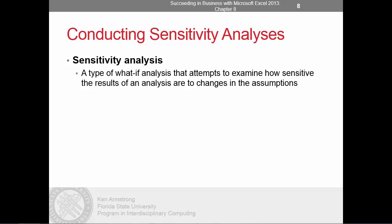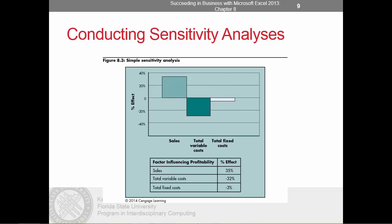Let's look at a sensitivity analysis chart. Because what-if analysis typically involves many estimates and projections, sensitivity analysis helps managers learn how tolerant projected results are to changes in underlying assumptions about cost, selling price, and quantity sold. For example, if we vary our selling price, our variable costs, and our total fixed costs by $1, we see that a $1 change in selling price has a 35% positive influence on profitability, a rise of $1 in total variable costs creates a 32% drop in profit, and a $1 change in fixed costs has a 3% negative effect on profitability.